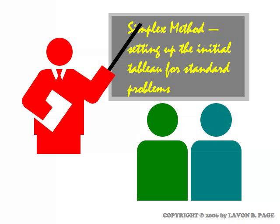This video begins our study of the simplex method. The simplex method is a way of using matrix techniques to solve linear programming problems, the same kind of problems we've been solving by graphing. One advantage of the simplex method is that you can solve problems with any number of variables. The graphing method is really applicable to only two variables because we can graph effectively only in two dimensions.